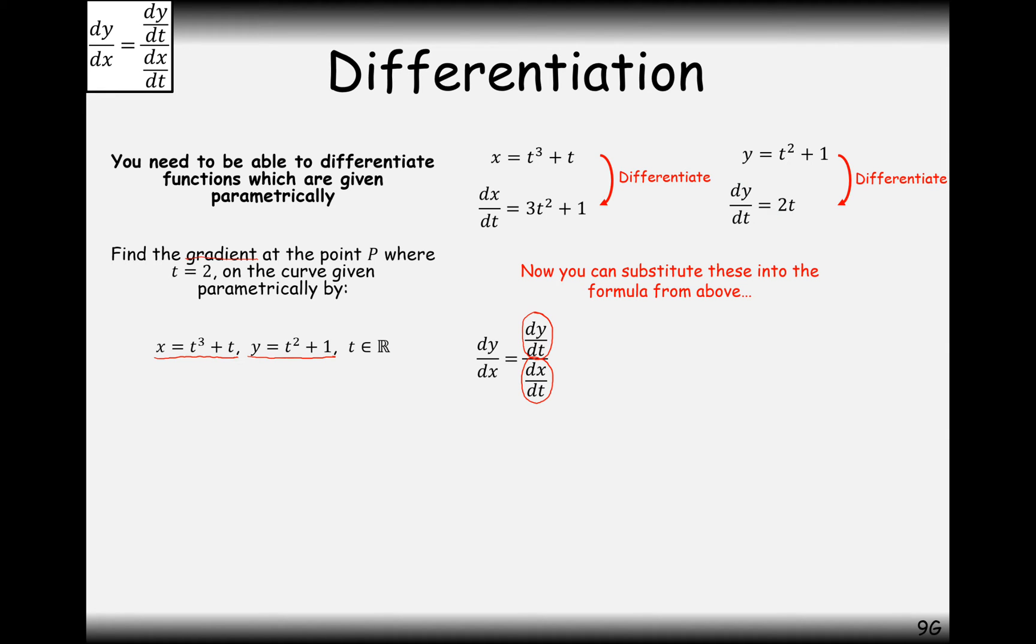So dy by dt will go on the top of the fraction. That's 2t. And dx by dt will go on the bottom of the fraction. So that's 3t squared plus 1. So this is the answer to the derivative of these two parametric equations here. But we'd like to find the gradient when t equals 2. So what we'll do is we'll substitute that in then. You can see how all of these are matching up here. So substituting the value t equals 2 and we get an answer of 4 over 13.